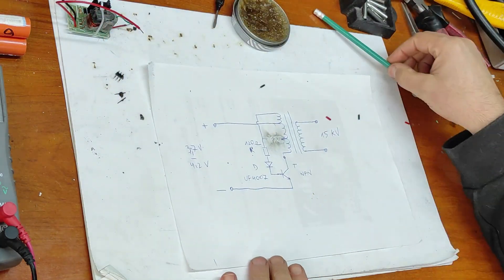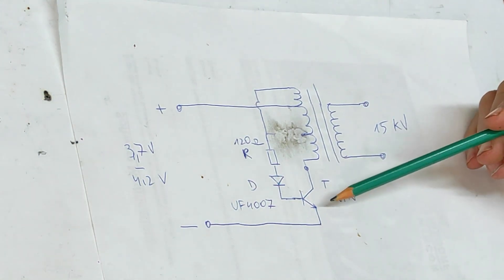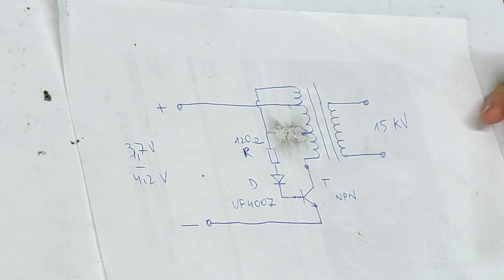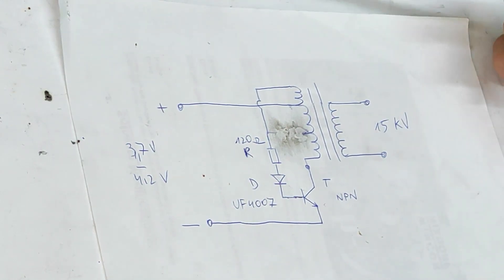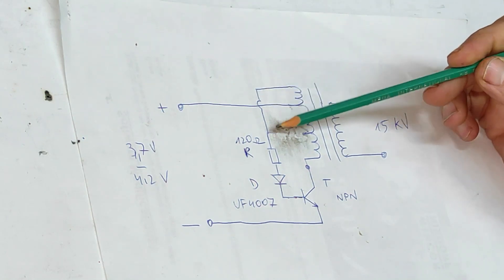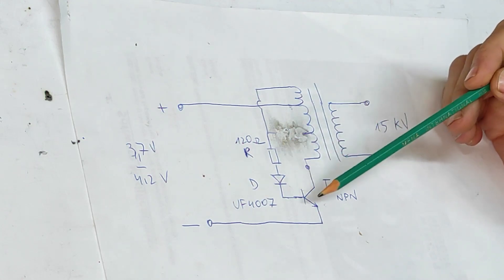First of all, let's discuss the schematics. This is the schematic, it's very simple - it's one simple oscillator with one transistor and one high voltage transformer. Let's see how it works.